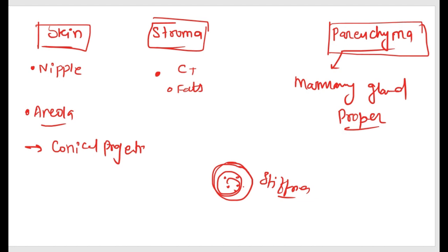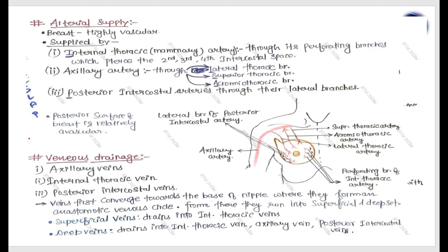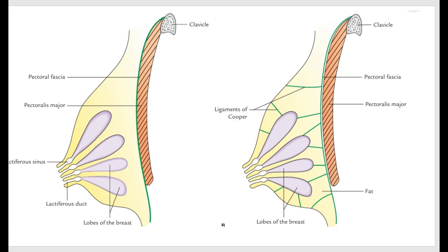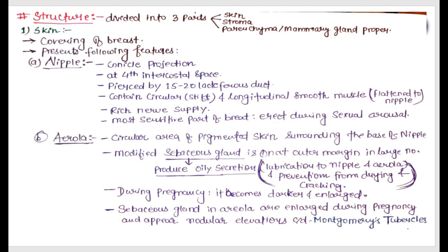To summarize: the nipple is a conical projection located at the fourth intercostal space, as you can see in this slide. It is pierced by 15 to 16 lactiferous ducts. It is the most sensitive part of the breast and becomes erect during sexual arousal.